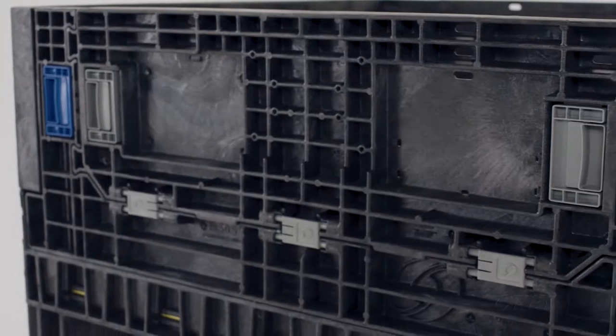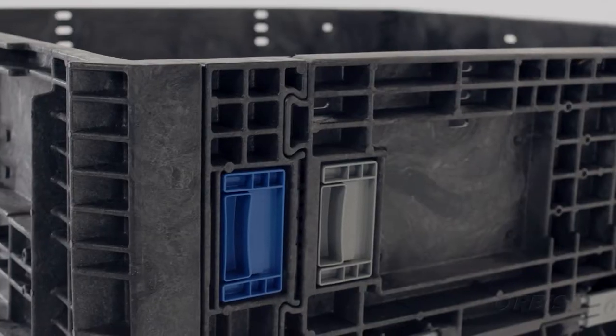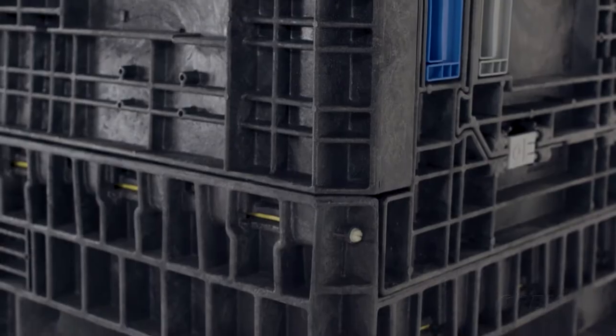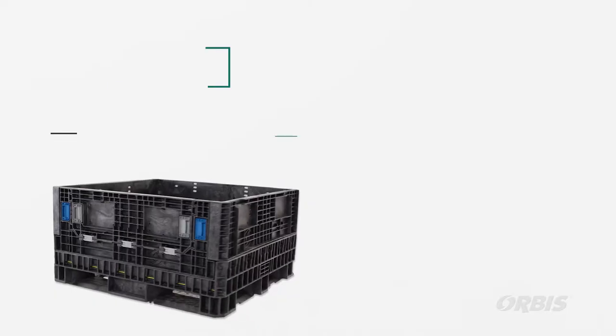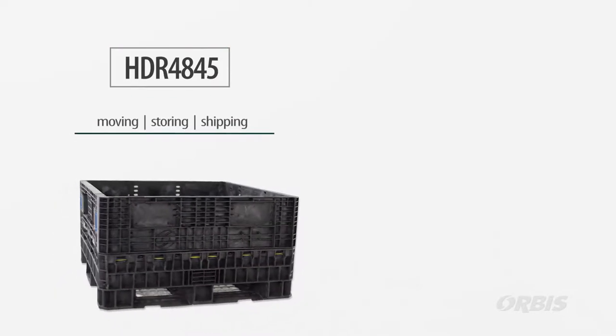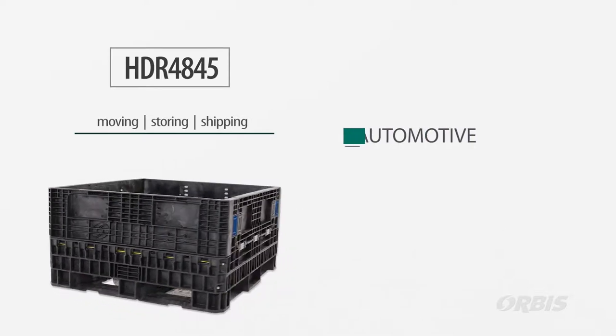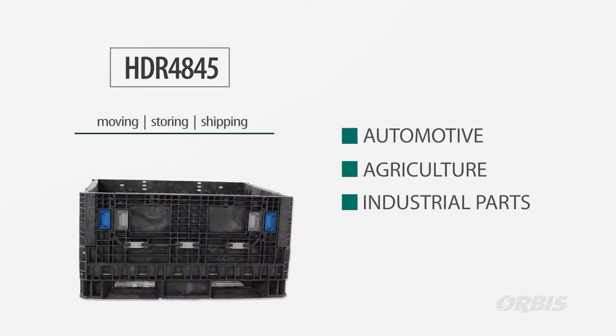The HDR BulkPak is made of high-density polyethylene plastic using a structural foam injection molding process. These containers are great for moving, storing, and shipping heavy-duty automotive, agriculture, and industrial parts.